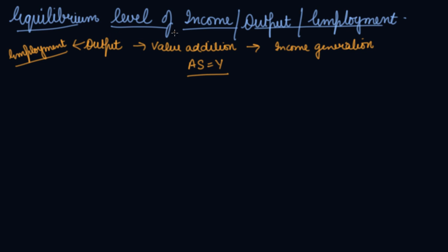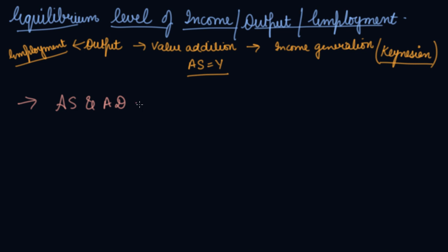If there is equilibrium level of income, output, or employment asked in the equation, you have to solve it in the same manner. This concept was given by Keynes, the economist. He said there is no difference between income, output, and employment. There are two approaches to it: number one is the AS and AD approach, and number two is the savings and investment approach.